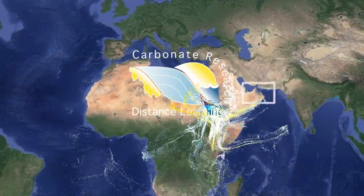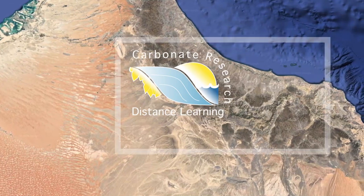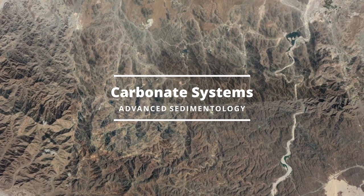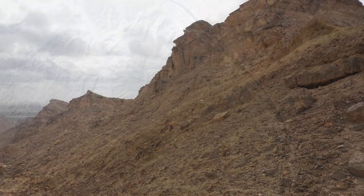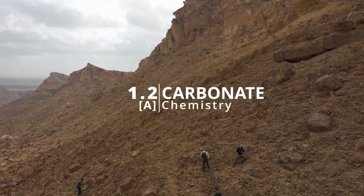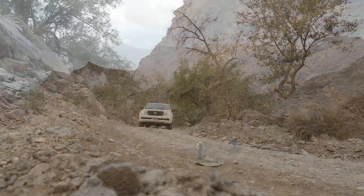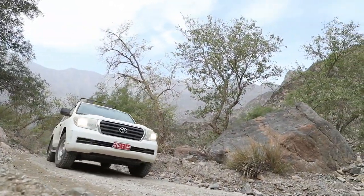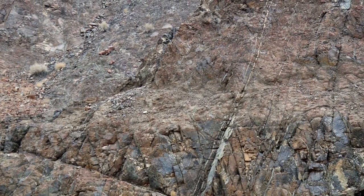Let's go back to the field to try to understand the chemistry of carbonates and their mineralogy. We're in a very different part of Oman — we're no longer at Shorfet Al Alameen. This is Wadi Abiyad, a famous location in Oman to see the semi-ophiolite, which are right behind the car there. You can see those brown rocks.